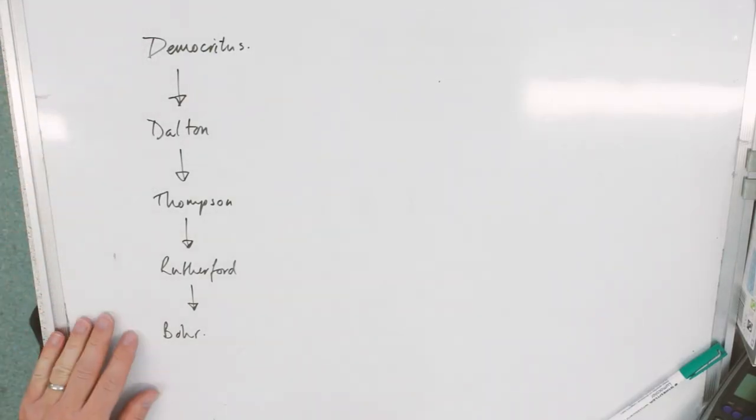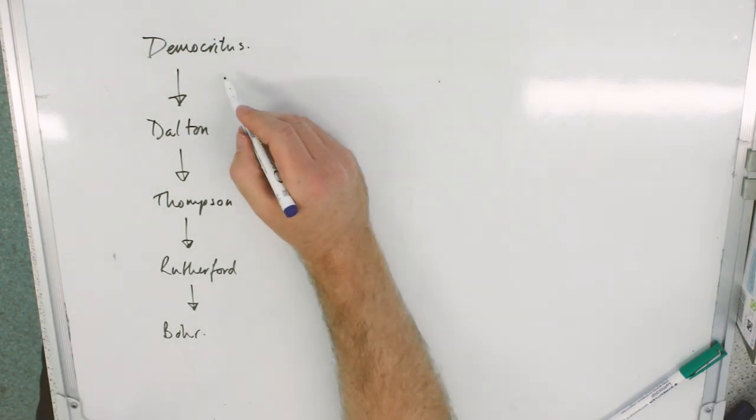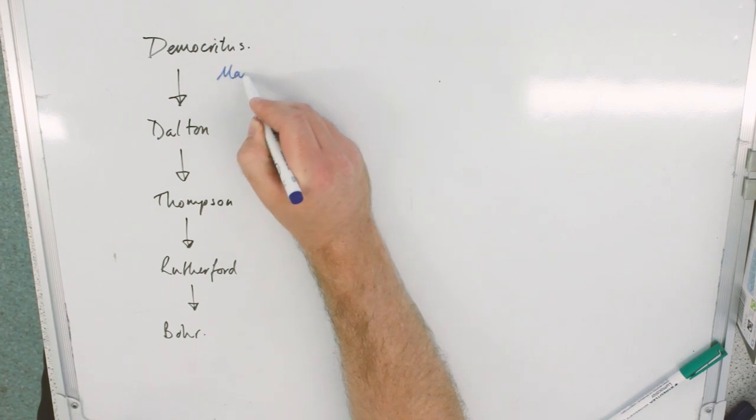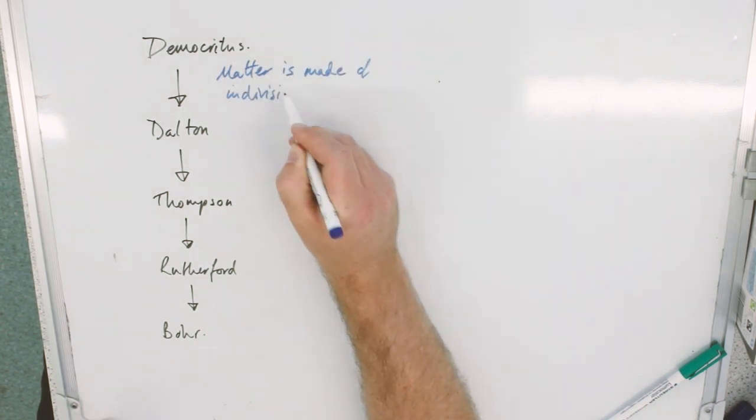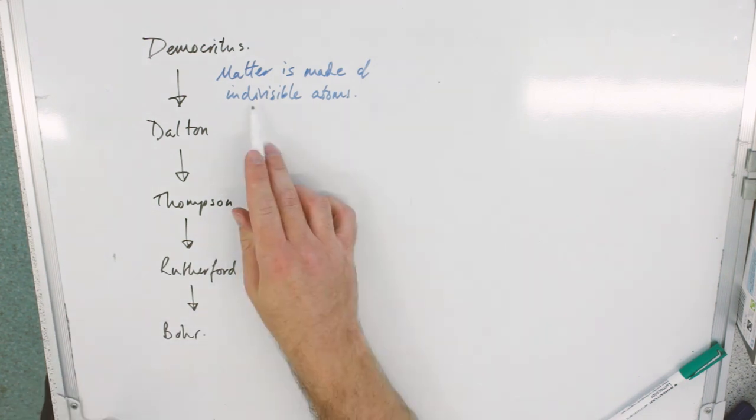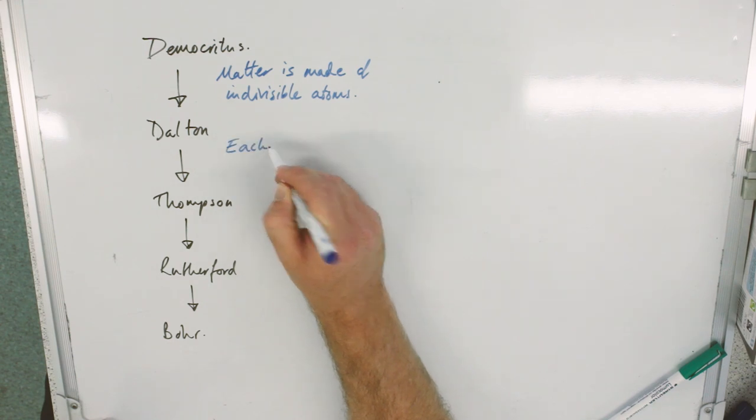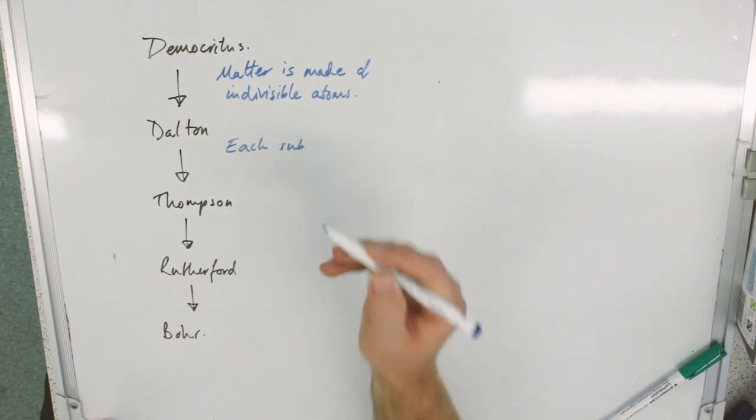This is our kind of journey of the model. Democritus had the idea that matter was made of indivisible atoms. You'd probably be careful with that word if you're writing an exam because you miss out a little bit of it and it looks like invisible. Indivisible. Dalton, each substance is made of different atoms.